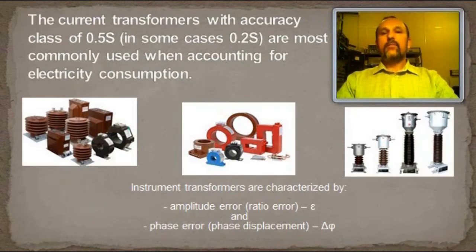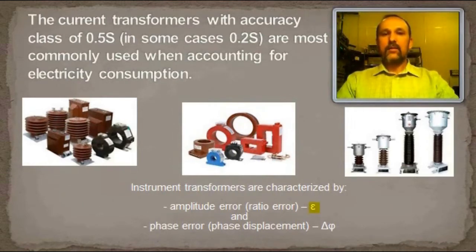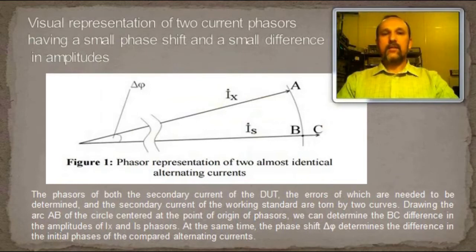When calibrating current transformer, ratio error of the device under test will be equal to the relative difference of the amplitudes of the secondary current of the working standard and the secondary current of the device under test. It is denoted by a letter epsilon. Phase displacement of the device under test will be equal to the phase difference of the set secondary currents. It is denoted as delta phi.